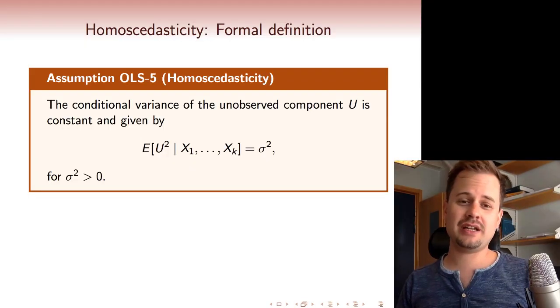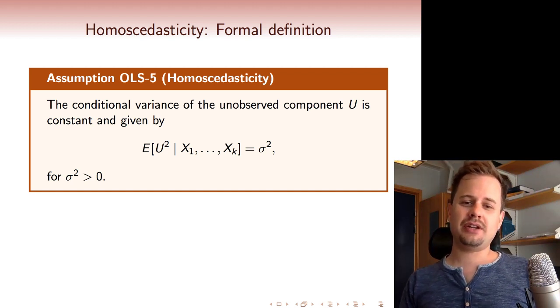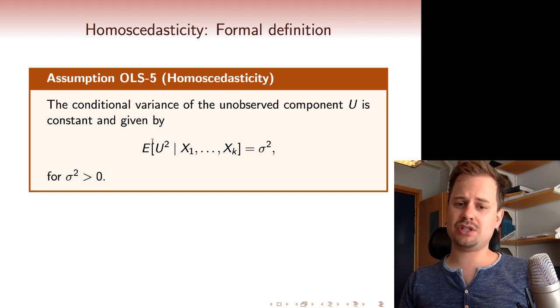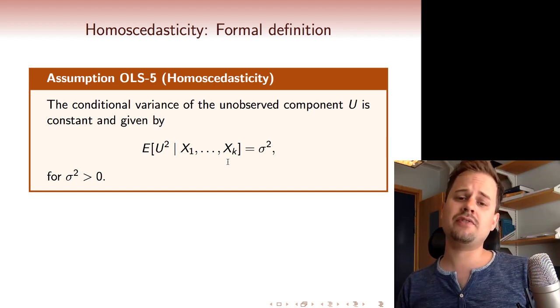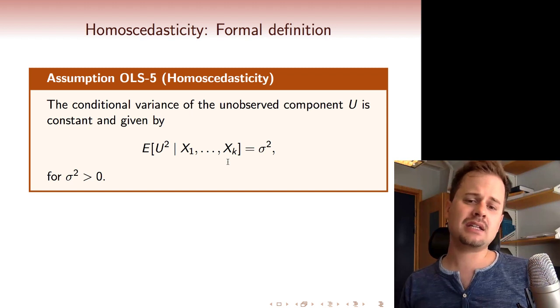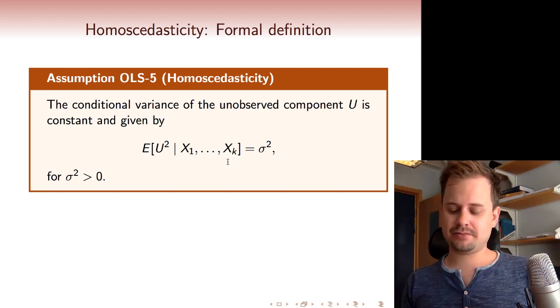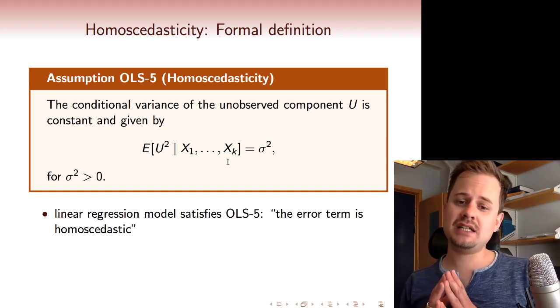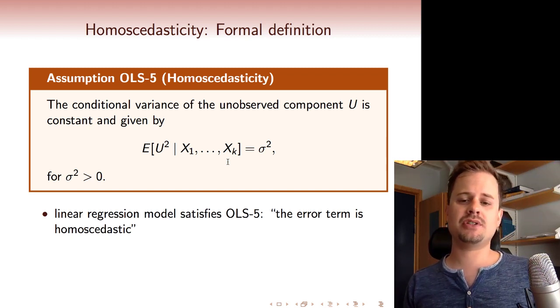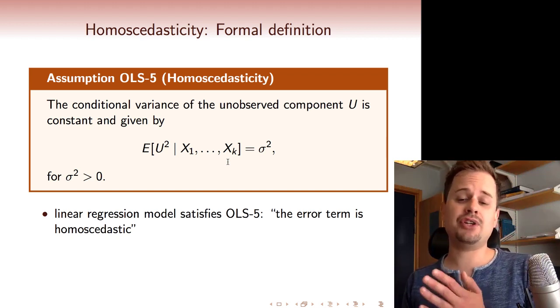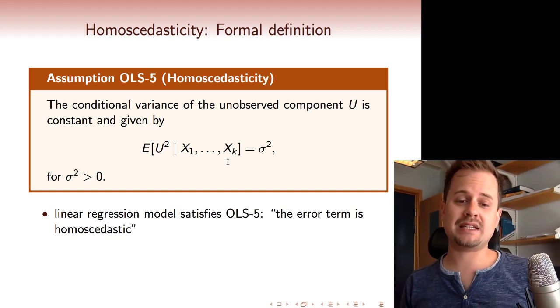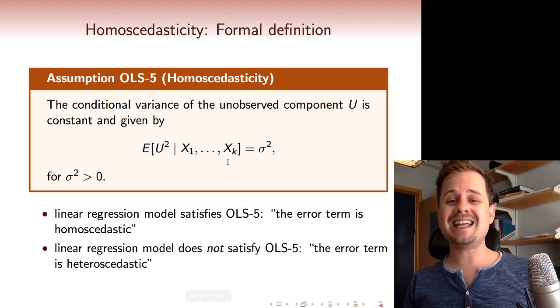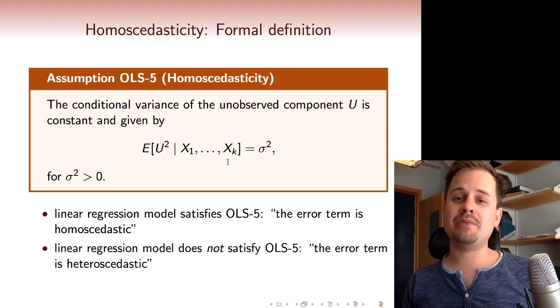So this new assumption is the fifth assumption that we are making, and we call it OLS5. This is the homoscedasticity assumption. The homoscedasticity assumption says that we shouldn't be able to predict U squared by looking at the regressors. And as I explained, you can think of the left-hand side here as a conditional version of the variance. So we're saying the Xs don't predict the variance of U. Whenever a linear regression law satisfies the assumption OLS5, then we say the error term, so remember error term is one name for U, then we say the error term is homoscedastic.